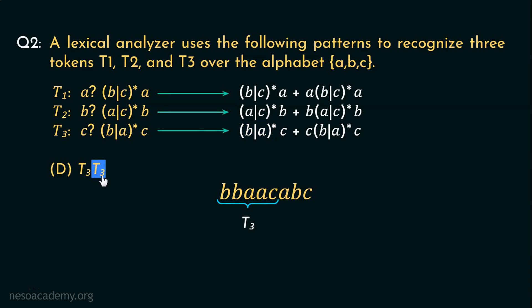Coming to the next T3, if we observe the remaining portion of the string, we have ABC. This can also be generated from this regex portion of T3 only. (B or A) whole star will help us represent AB and the C will represent the C at the end of the string. So using T3, T3, we can also represent the string.